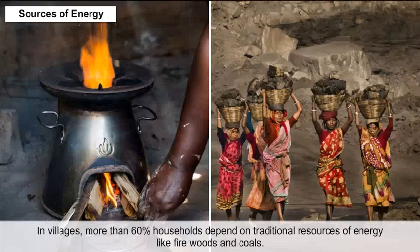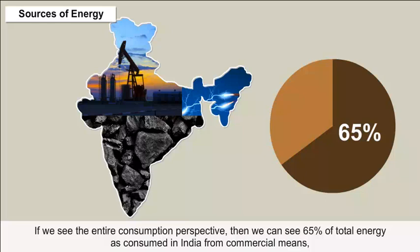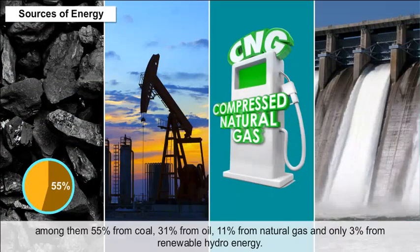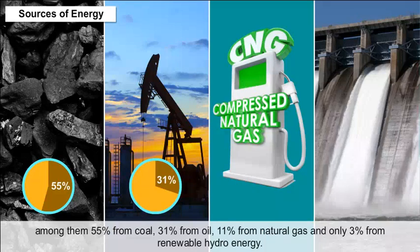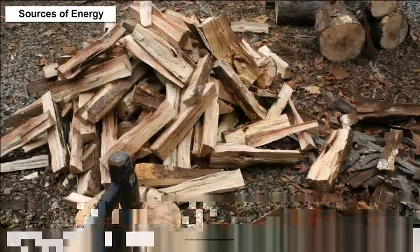In villages, more than 60% of households depend on traditional resources of energy like firewood and coal. Looking at the entire consumption perspective, 65% of total energy consumed in India comes from commercial means — among them, 55% from coal, 31% from oil, 11% from natural gas, and only 3% from renewable hydro energy.